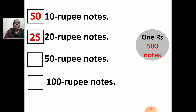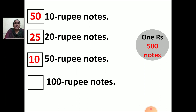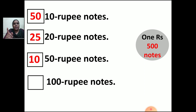Now, 50 rupee notes. How many 50 rupee notes will you take to make 500 rupees? 500 divided by 50 will be 10. So you should have 10 fifty-rupee notes. 10 fifty-rupee notes will make 500 rupees. And last, how many 100 rupee notes will you take to make 500 rupees? In the table of 100, when you get 500 — 5s are there. 100, 100, 100, 100, 100 — that is 5 notes. So 5 hundred-rupee notes will make 500 rupees.